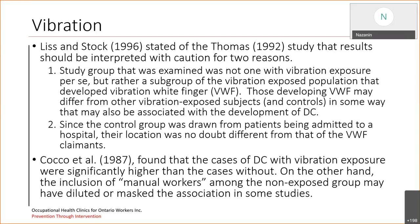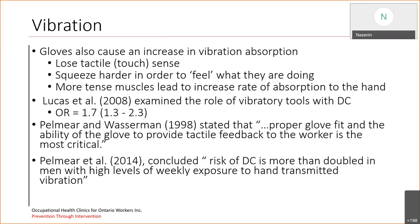In general, the Thomas study still showed a positive association, and another study in 1987 found that cases of Dupuytren's with vibration exposure were significantly higher than cases without. On the other hand, the inclusion of manual workers among the non-exposed group may have diluted or masked the association in some studies, meaning the association might be even higher if they were excluded. When talking about vibration, it's important to take into account gloves, as they can cause an increase in vibration absorption — because by decreasing tactile sense, workers have to squeeze harder, creating tension on the muscle that increases the rate of vibration absorption to the hand.